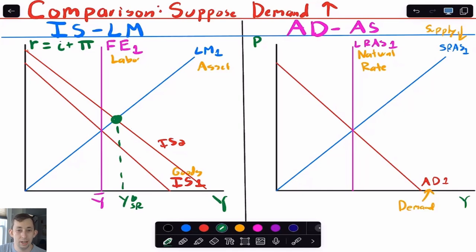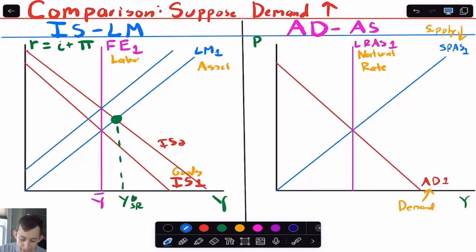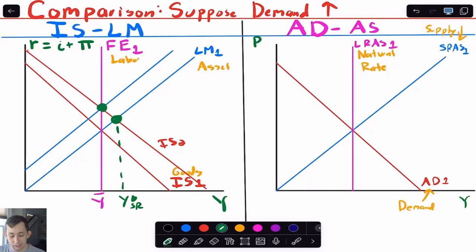How does the economy get back to the natural rate of output, given that we haven't moved the full employment line? The LM curve is going to react — it is going to shift up until we get back to the natural rate of output, but now at a higher real interest rate. The interest rate has increased, the LM curve has shifted back, and we are back at our natural rate of output. All that's happened in the long run is we've increased the real interest rate.